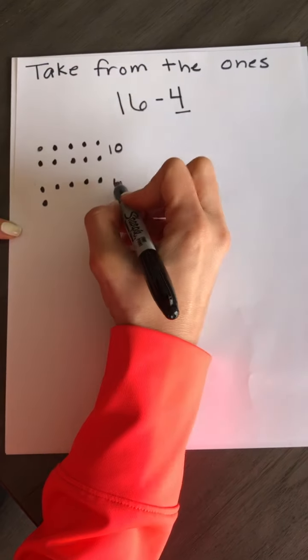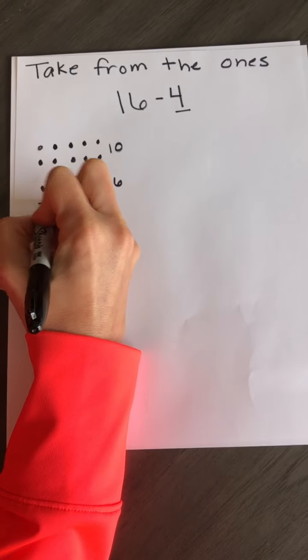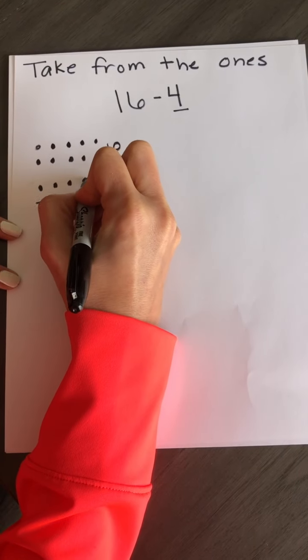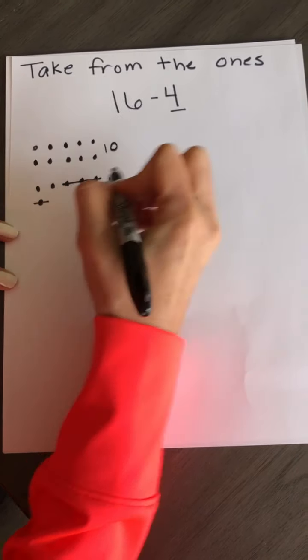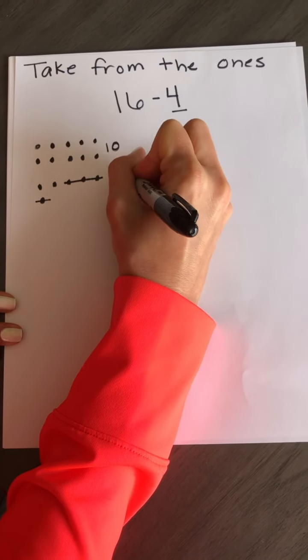I can subtract 4 ones from the 6. So I'm going to subtract 1, 2, 3, 4 and I'm just going to draw my line right through it and right next to it I'm going to put minus 4.